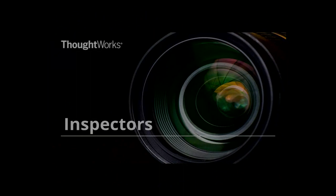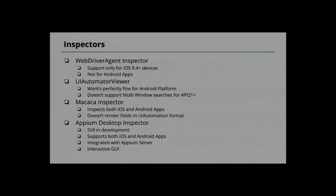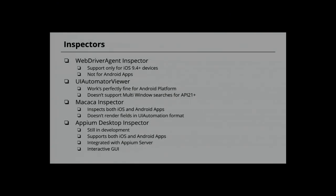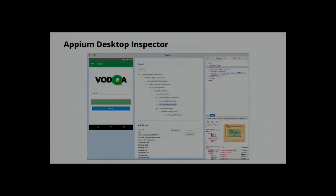Macaca came up with a concept to fill these gaps — inspect elements in both Android and iOS platforms. But still there is a limitation: it doesn't render properties for elements in the UI Automation library, which is a pretty old library that Apple deprecated a couple of years back. Next is APM Desktop Inspector, still in development, which supports both platforms and integrates with the APM server with a pretty good GUI.